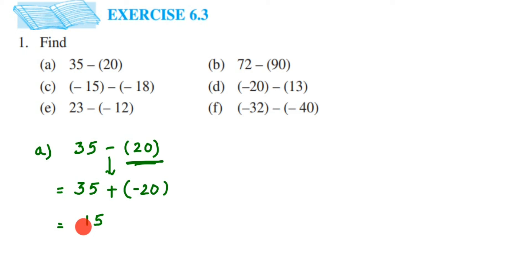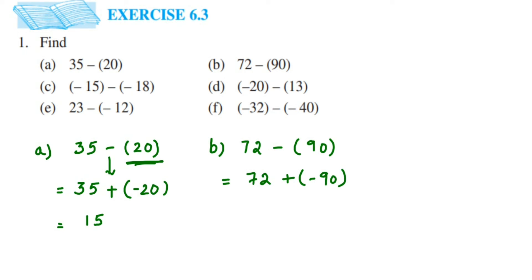The second problem is 72 minus 90. Instead of subtracting, I add the additive inverse of 90, which is minus 90. So it becomes 72 plus (minus 90). Now follow the rule of addition: both integers have different signs, so we subtract. 90 minus 72 gives us 18. Which number is greater — 72 or 90? It's 90, and its sign is negative, so the final answer is minus 18.